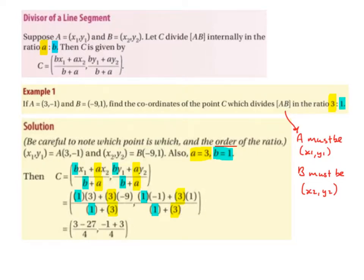It's very important that when we label our coordinates A and B, since the A came first, the A must be (x1, y1) and the B must be (x2, y2). Please be careful to note which point is which and the order of the ratio. 3 to 1. 3 comes first, 1 comes second.